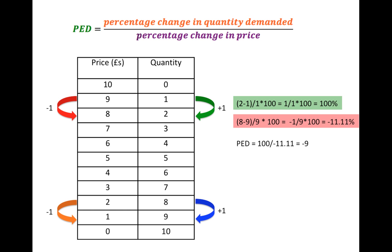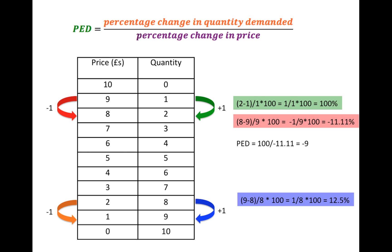In the example where the price is being lowered from 2 to 1, the quantity is increasing from 8 to 9. That increase in quantity in percentage terms is 12.5% — one extra unit over a previous existing quantity demanded of 8 is a lot less in relative terms than one unit increase over the first unit consumed. 12.5% divided by the decrease in price, which is minus 50% because we're halving the price, means the PED is minus 0.25, which is relatively inelastic.